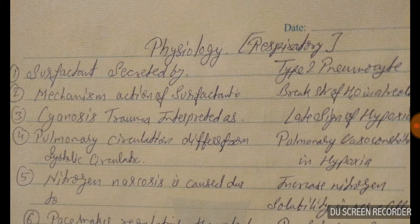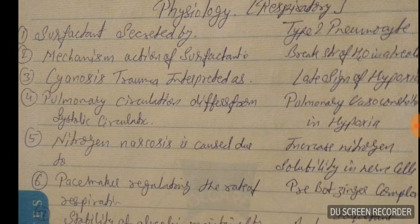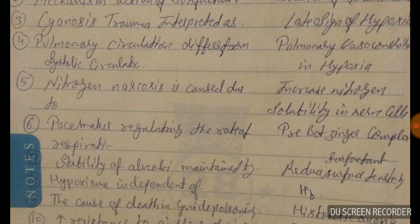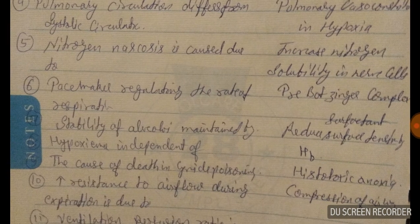Answer to question four. Question number five: nitrogen narcosis is caused due to increased nitrogen solubility in our cells. Question number six: the pacemaker regulating the rate of respiration is the pre-Bötzinger complex.